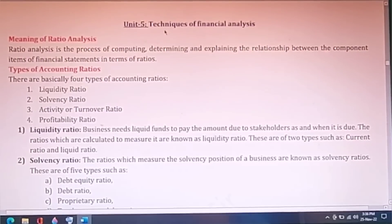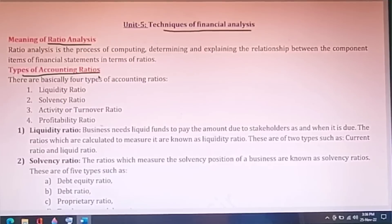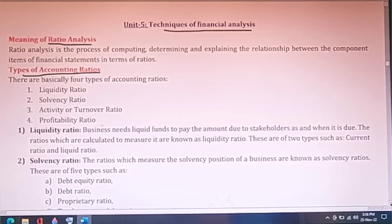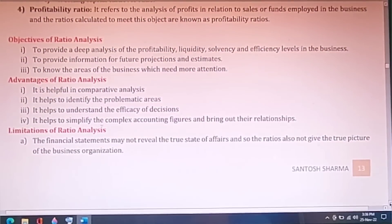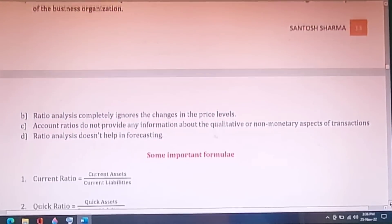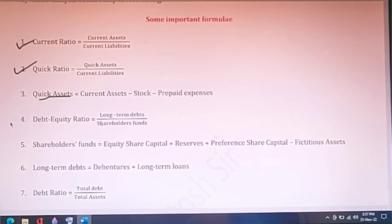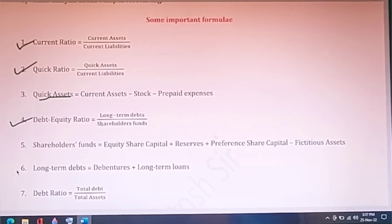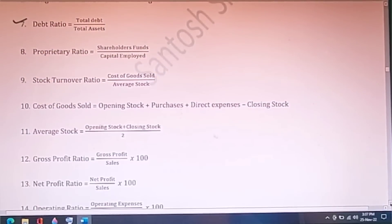Unit 5 is on techniques of financial analysis. You should read about what is ratio analysis and the different types of accounting ratios. From this chapter, practical numerical questions generally appear. All important formulas have been written here including current ratio, quick ratio, how to find quick assets, debt equity ratio, and long term debt.